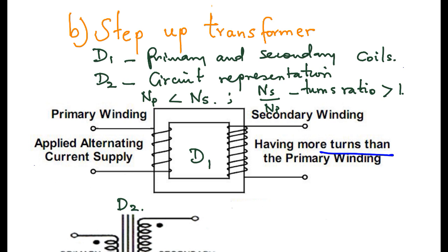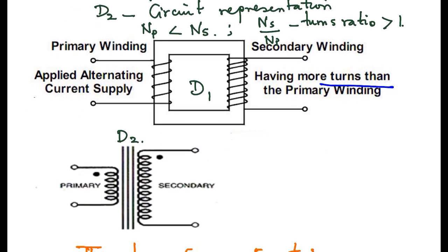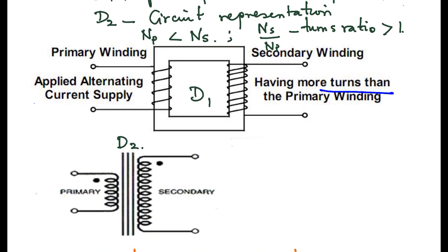Consequently, the secondary output voltage, which we represent as Vs, is greater than the primary input voltage.